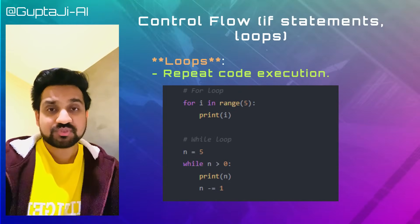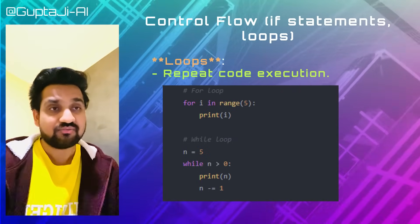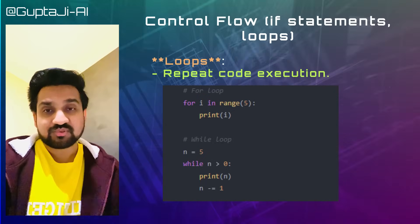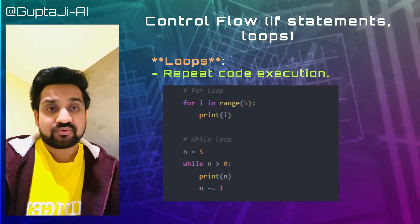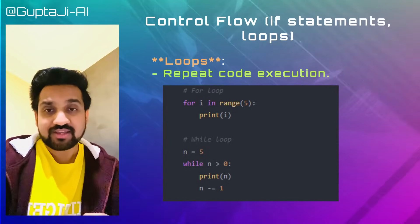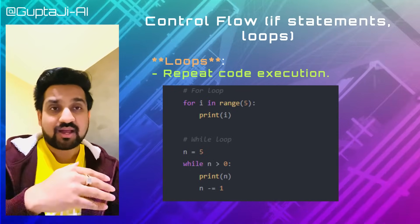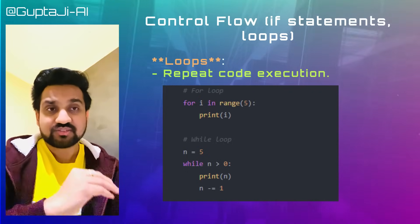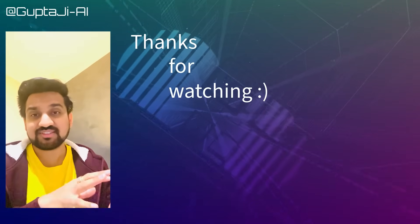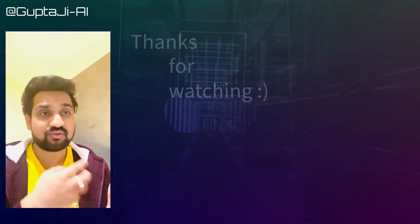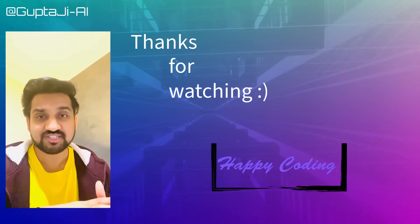Loops are essential for repeating code execution efficiently. There are two common types of loops in Python. The for loop iterates over a range of values printing each value, while the while loop decrements the value of n and prints it until it reaches 0. Mastering these foundational concepts will empower you to craft elegant, efficient Python programs that tackle real-world challenges.